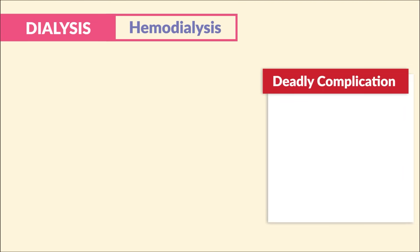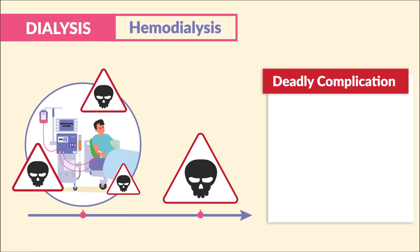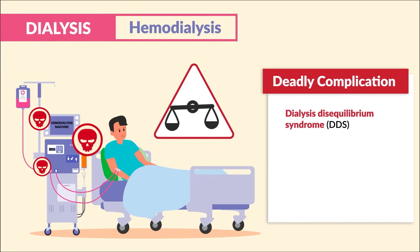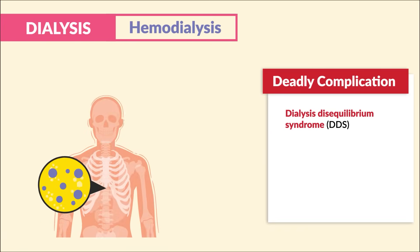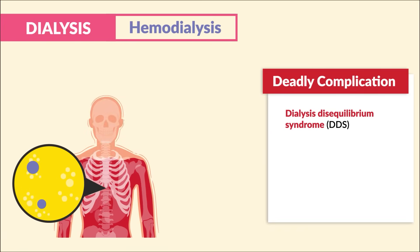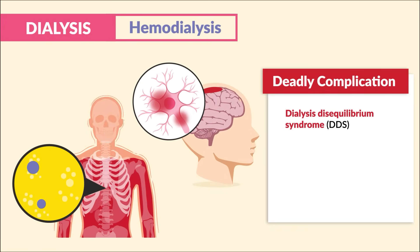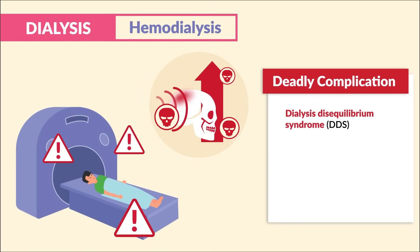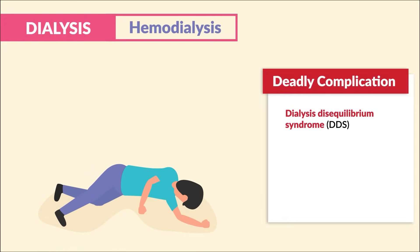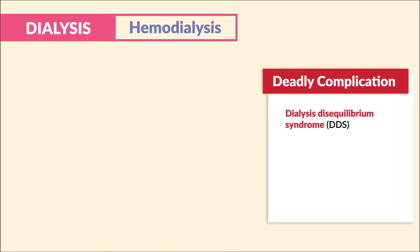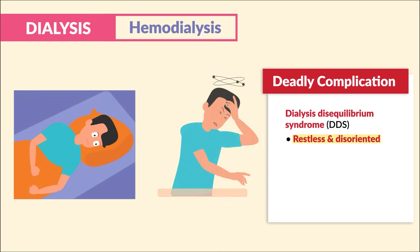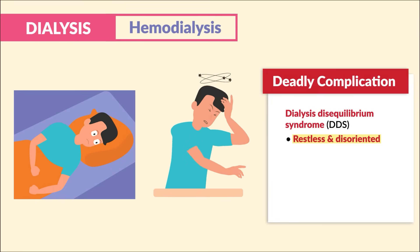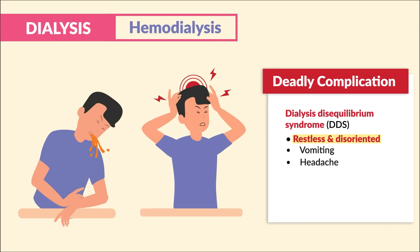Dialysis disequilibrium syndrome — DDS — is a deadly complication during or after hemodialysis. It's a condition where solutes are removed too quickly from the blood, which causes brain cells to swell with fluid, resulting in deadly increased ICP — intracranial pressure — which eventually leads to coma and then death. The key signs to write down: restless and disoriented are the biggest ones, during dialysis or even after. Also vomiting and headache.